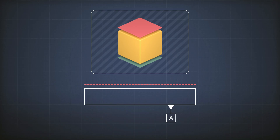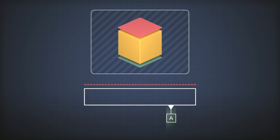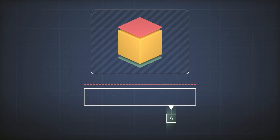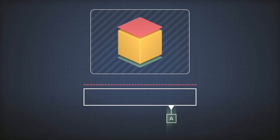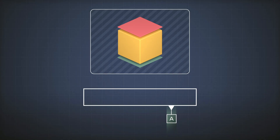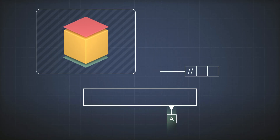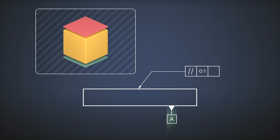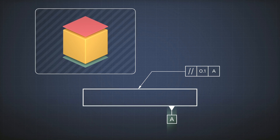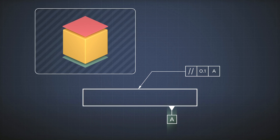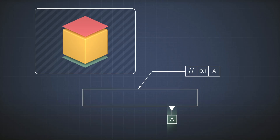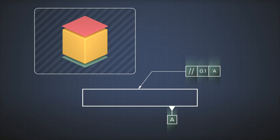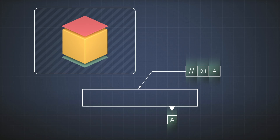In this box we give the datum a name — we will call it A. So element A in this case is that surface. I then go to my feature control frame and put the tolerance we want. Here we are tolerating parallelism, which looks like this. We put the value of the tolerance zone in the middle section, and at the end we put our reference, our datum. So we say we want this surface to be parallel to surface A with a tolerance zone width of 0.1.